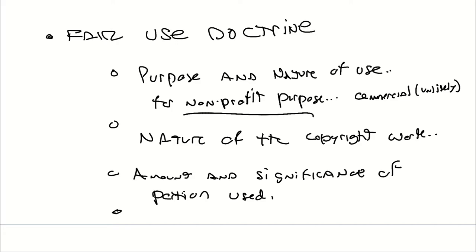The amount and significance of the portion used matters whether it falls under fair use doctrine. If you have a lot of copyrighted content, it can be argued you're infringing; if you have a little, it can be argued you're okay under fair use. What is 'a lot' and 'a little'? It really depends. Is a one-minute clip of a two-hour movie a small amount? It's less than one percent of the movie's length — but somebody can argue that showing one whole minute of a movie is still a lot.